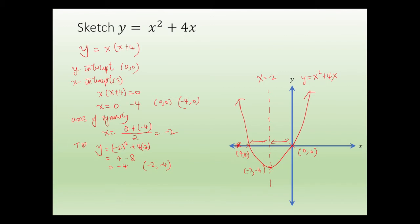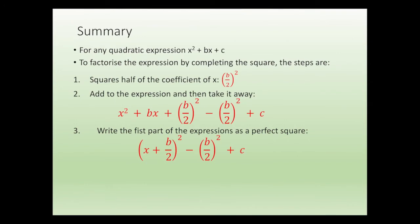Now, if I ask you to convert y equals x squared plus 4x into the turning point form, how do you actually do it? I would like you to recall completing the square. For any quadratic expression x squared plus bx plus c, to factorize by completing the square, the steps are: square half of the coefficient of x — that's (b over 2) squared — then add it to the expression and take it away. Once you have added and taken away (b over 2) squared, you can write the first part of the expression as a perfect square.